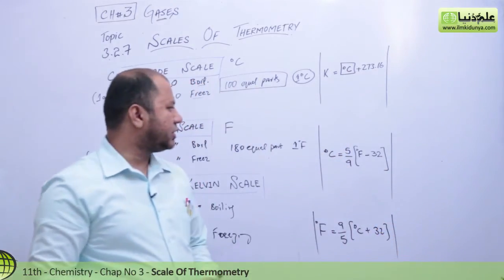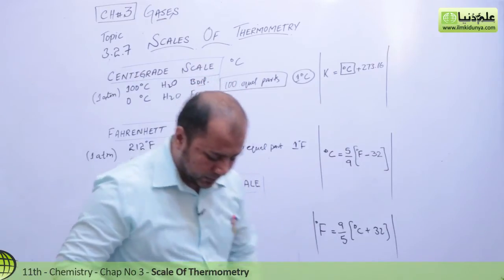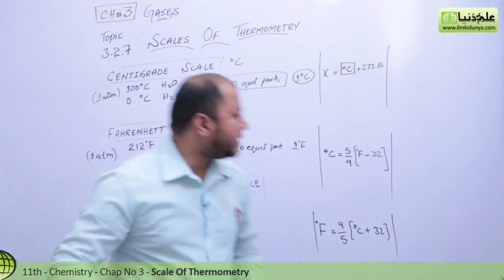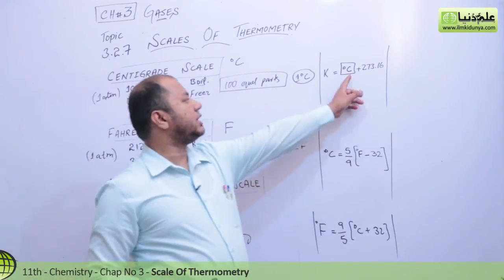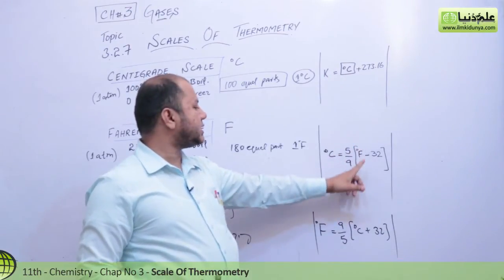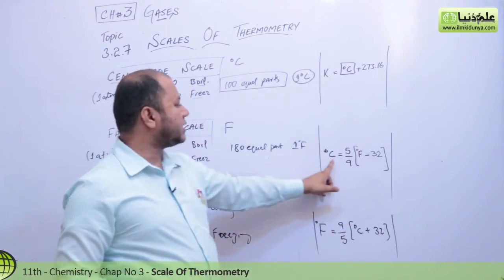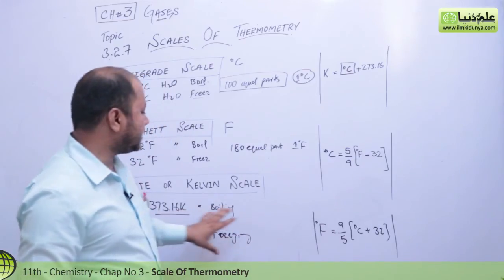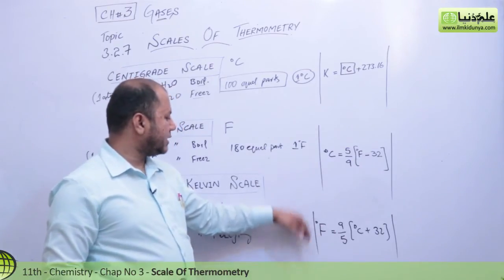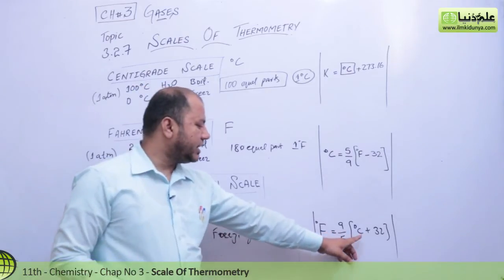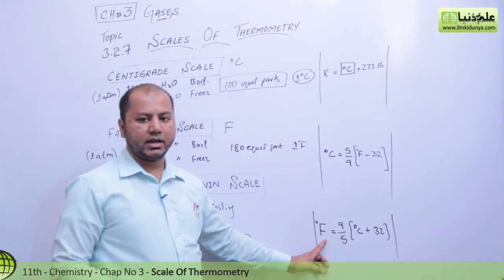Students often get confused about which formula to use. Simply: if your temperature is in degrees, convert to Kelvin using the first formula. If temperature is in Fahrenheit, convert to degrees using the second formula. And this formula relates degrees to Fahrenheit. Converting between Fahrenheit and Kelvin or degrees and Kelvin is not a difficult task.